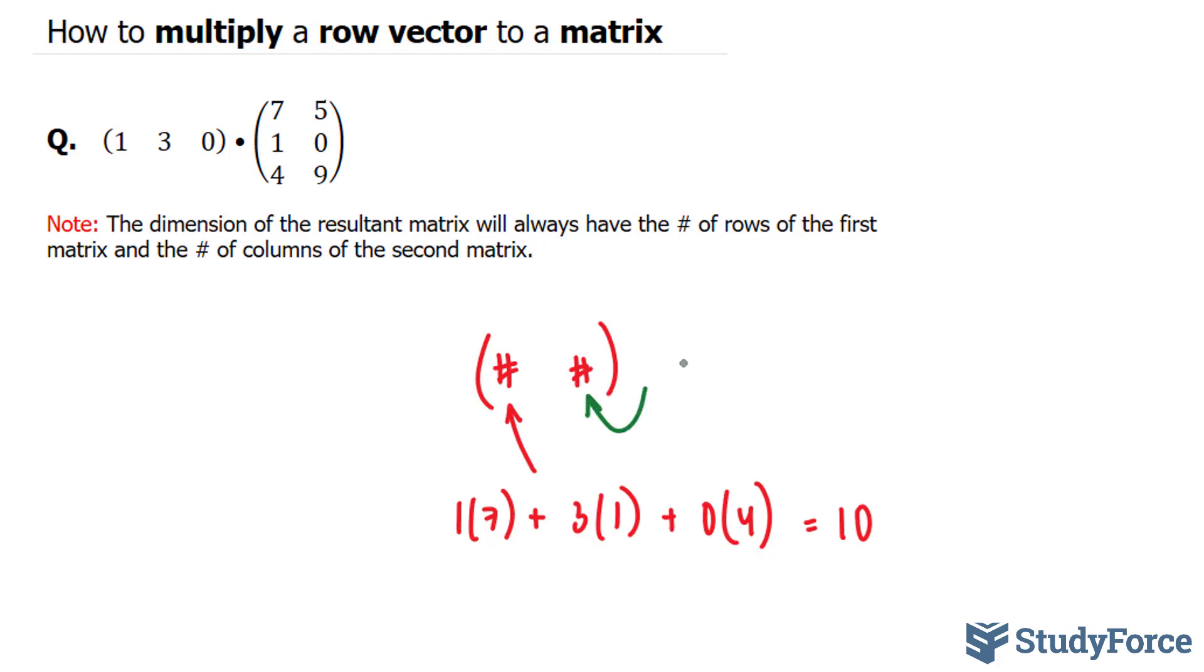So we have 1 times 5 plus 3 times 0 plus 0 times 9. This one is easy. This becomes 0, that becomes 0, and your final answer is 5.